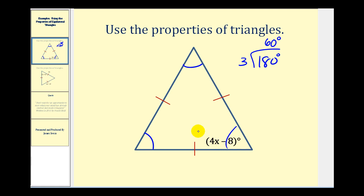So now we can determine the value of x. We're going to have 4x minus 8 equals 60. So now we'll add 8 to both sides of the equation. So 4x equals 68. Now we'll divide both sides by 4 to determine the value of x. So we have x equals 17.